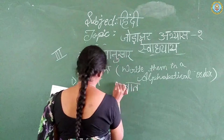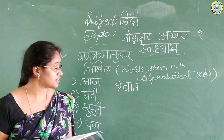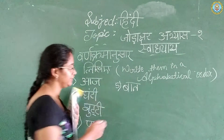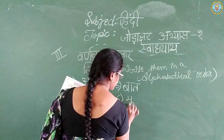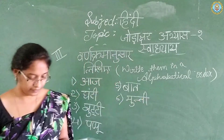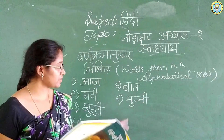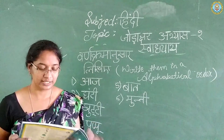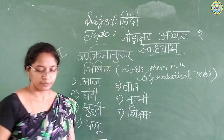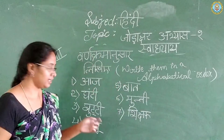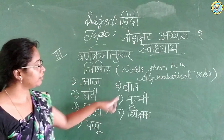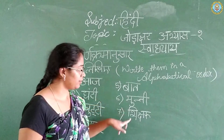Very good. Which is the next? After Ba, which letters will come? Yes — Muni. Very good. Muni. And after that, which letter comes after Ma? Yes, there is Shikshak. So it is in alphabetical order: Aaj, Ghandi, Chutti, Pappu, Baad, Muni, and Shikshak.